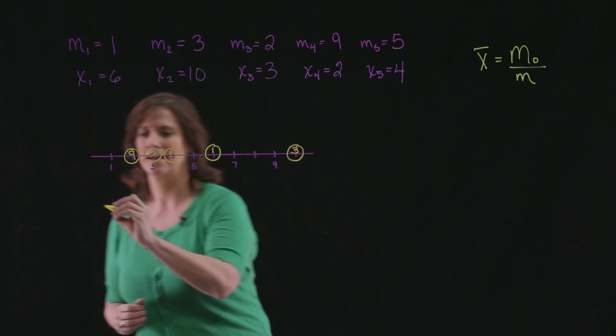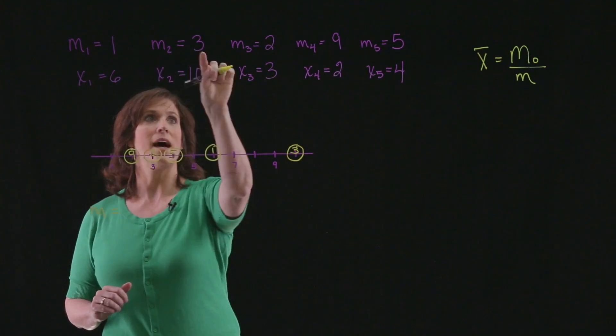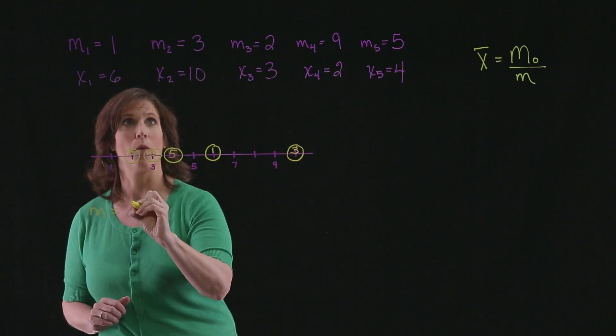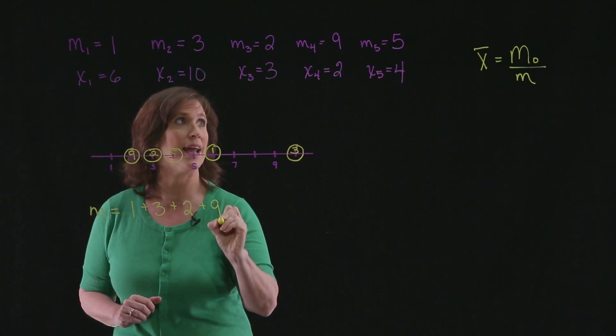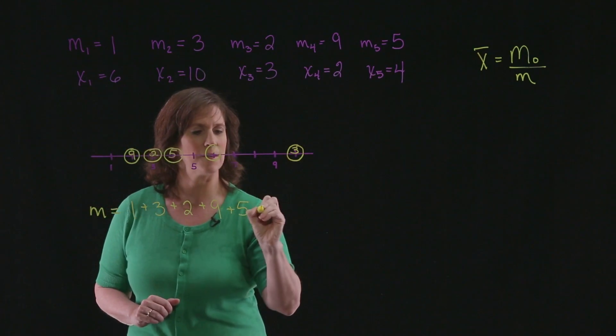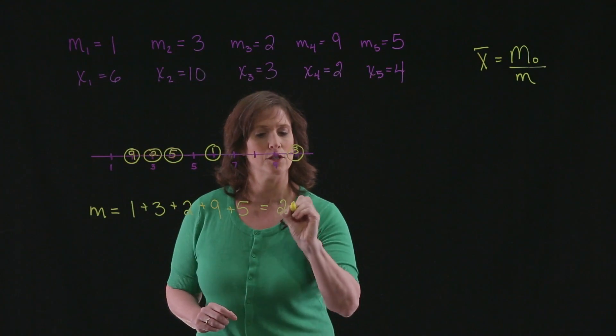Let's begin with the total mass. The total mass in this problem is simply going to be the sum of these mass values. So I've got 1 plus 3 plus 2 plus 9 plus 5, and that's going to give me a total of 20.